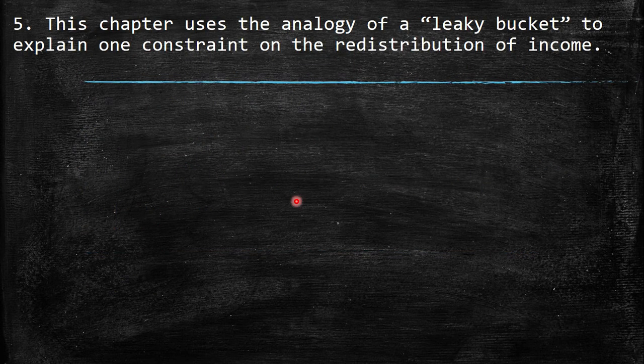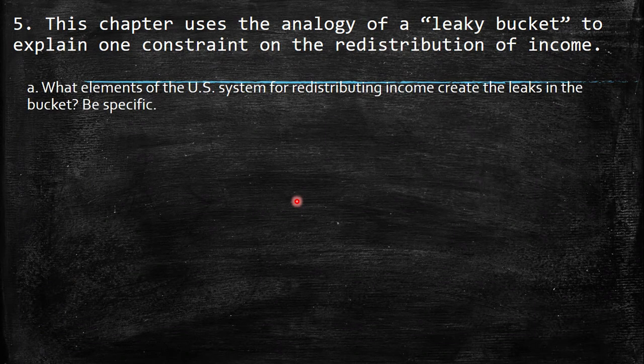The fifth question says: this chapter uses the analogy of a leaky bucket to explain one constraint on the redistribution of income. What elements of the US system for redistributing income create the leaks in the bucket? Be specific.